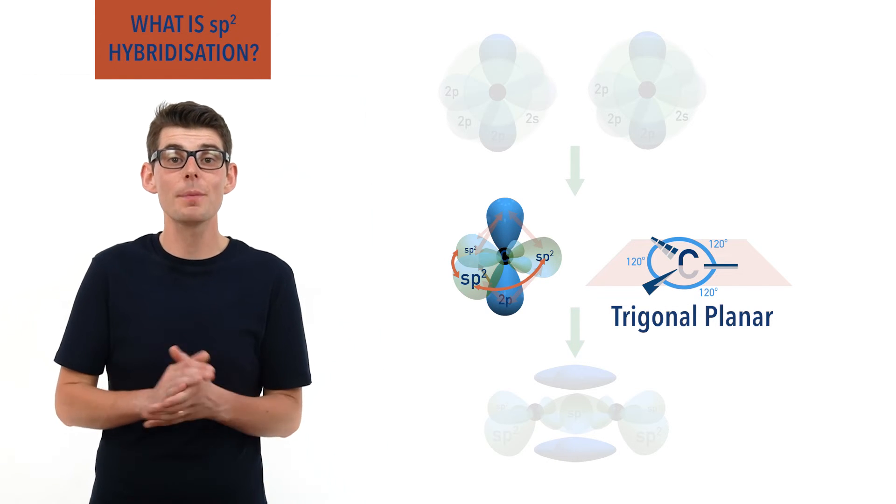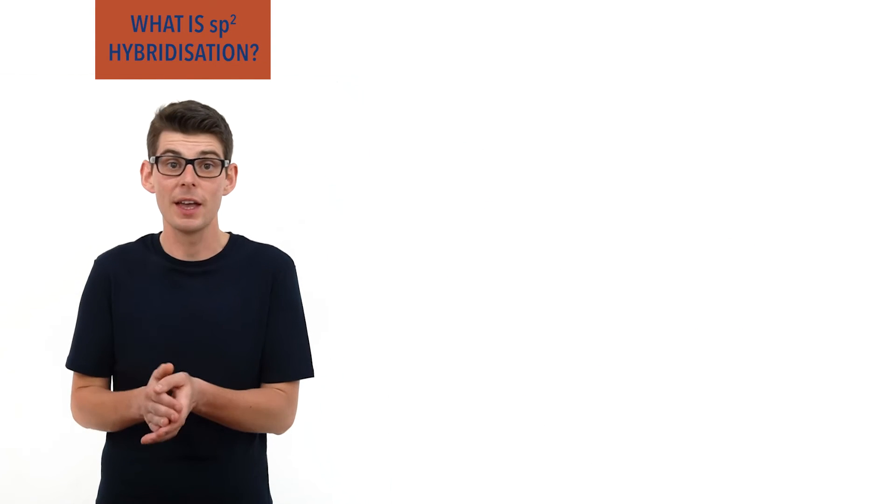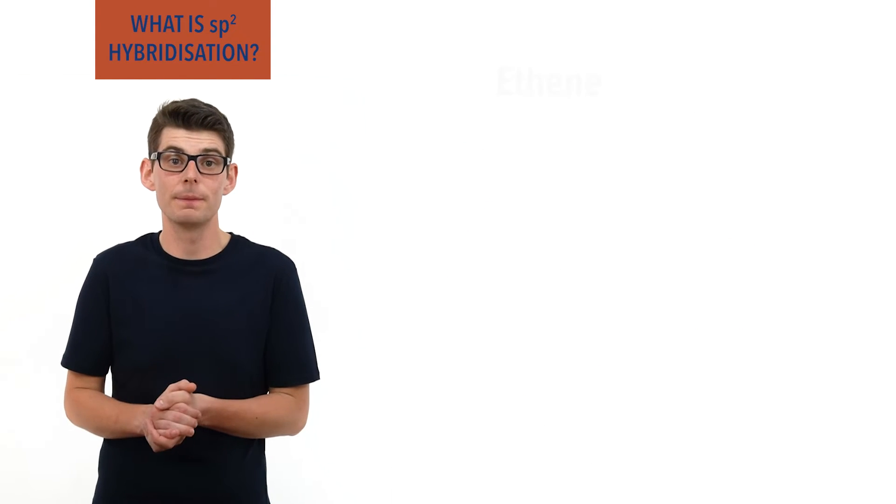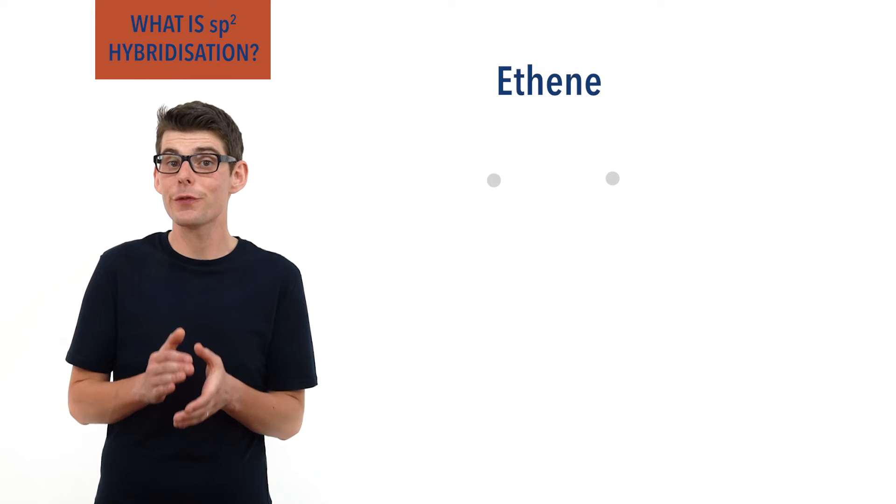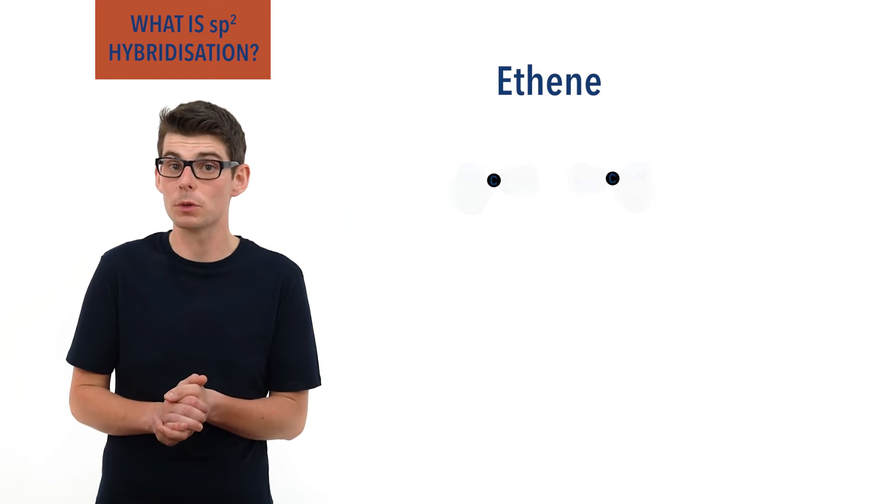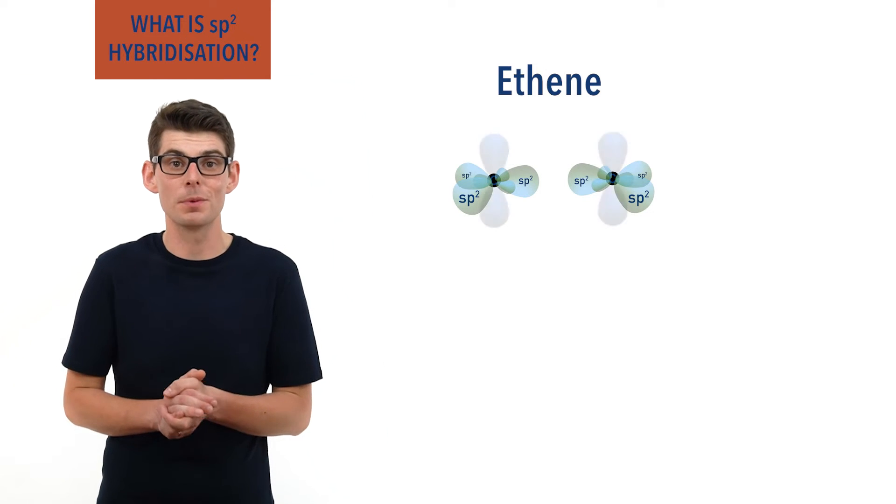For example, when two carbon atoms double bond together and form the molecule ethene, each carbon atom has three sp2 hybrid orbitals and a half-filled p orbital.